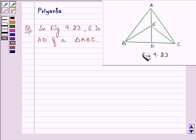Now this is figure 9.23 which we need to refer, where E is any point on median AD of triangle ABC. We need to equate the area of ABE, that means this triangle, with the area of ACE, that means this triangle.